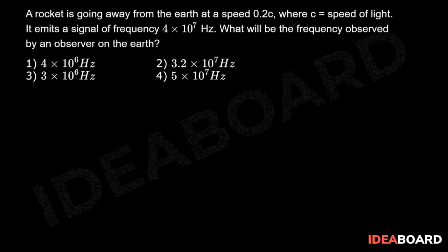The frequency observed by the observer on the earth, n' equals n times (1 minus v by c), which is equal to 4 × 10^7 times (1 minus 0.2c by c).